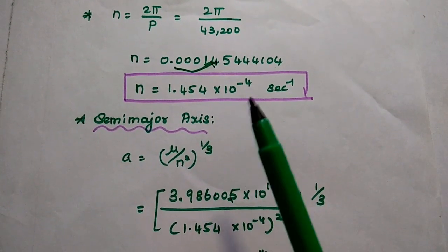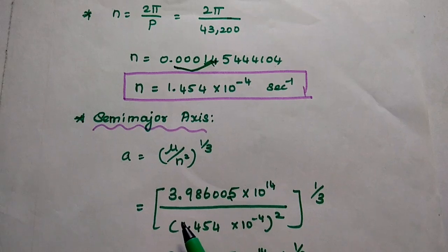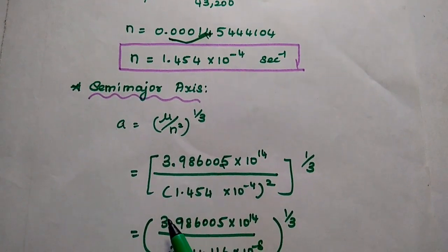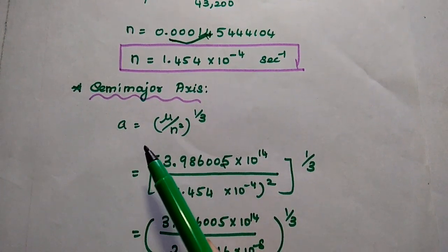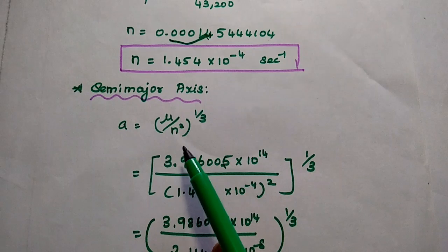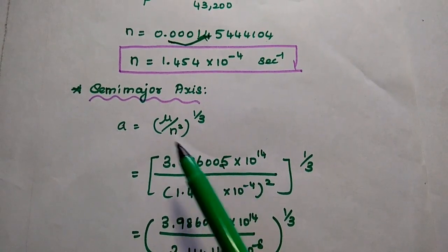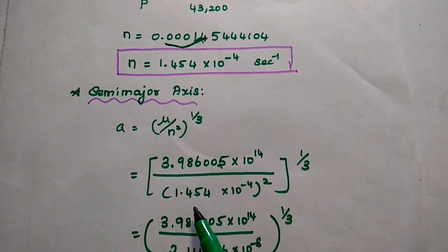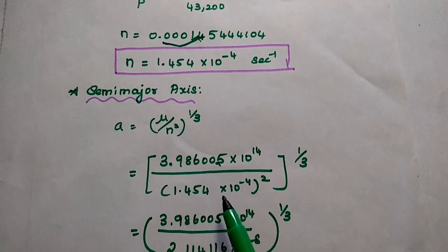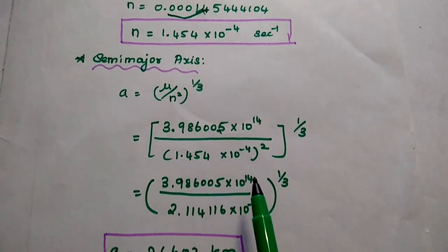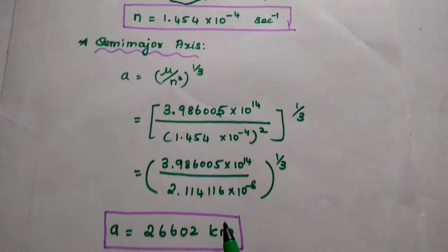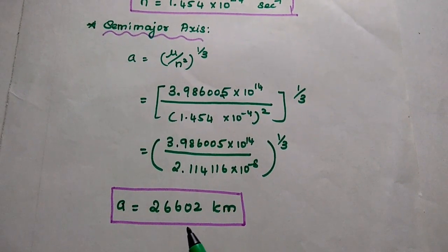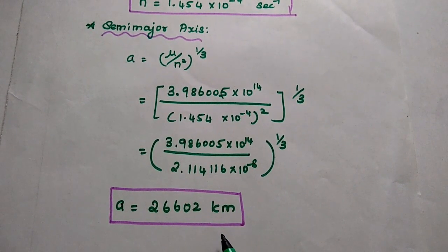After that we substitute this n value in the semi-major axis formula. According to Kepler's third law, A is equal to (mu divided by n squared) to the power 1 by 3. Substituting the constant value of mu divided by n squared, we can get the semi-major axis value as approximately 26,602 km.